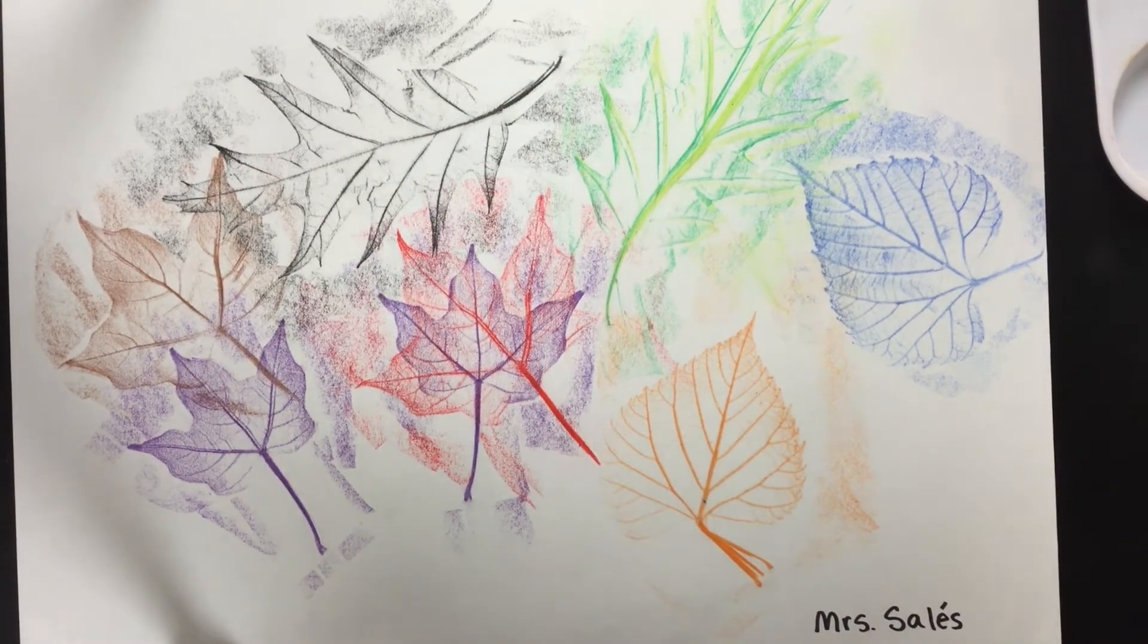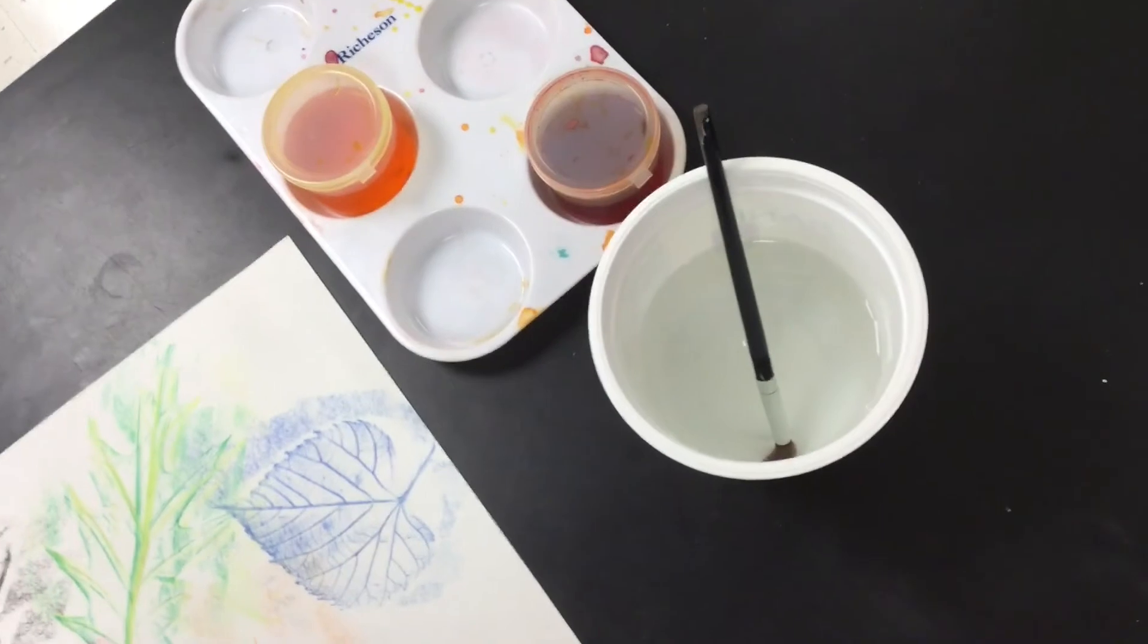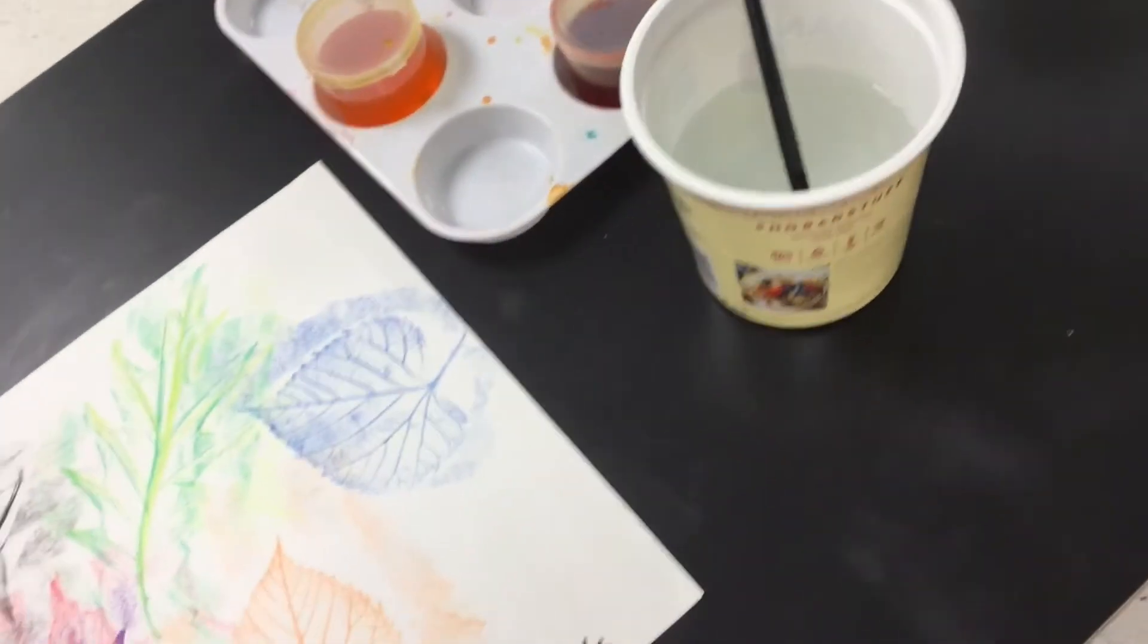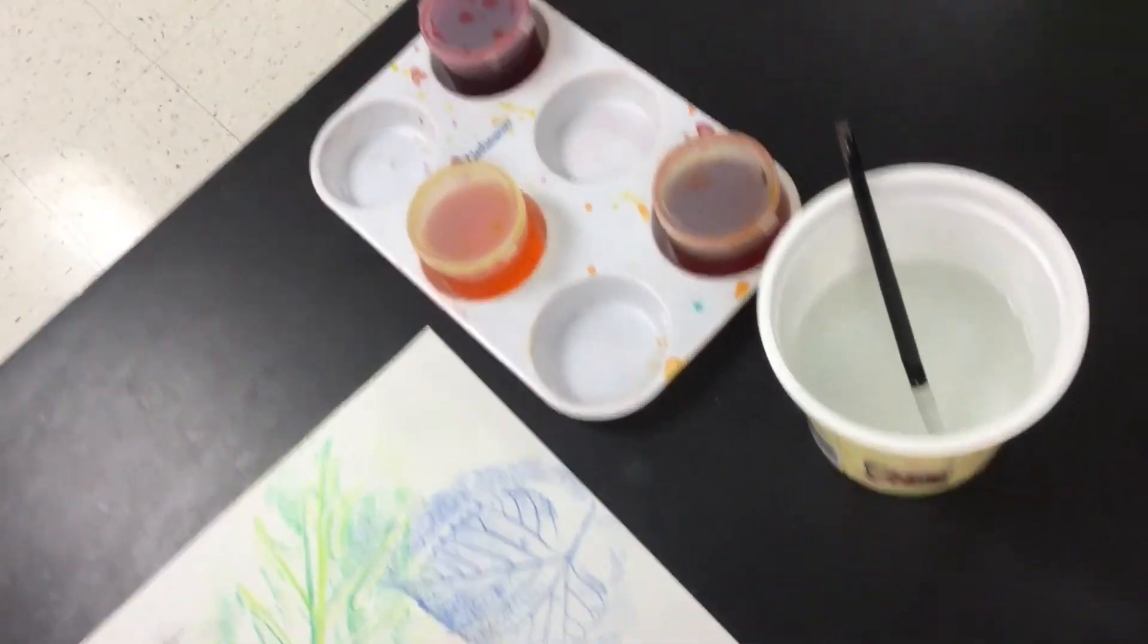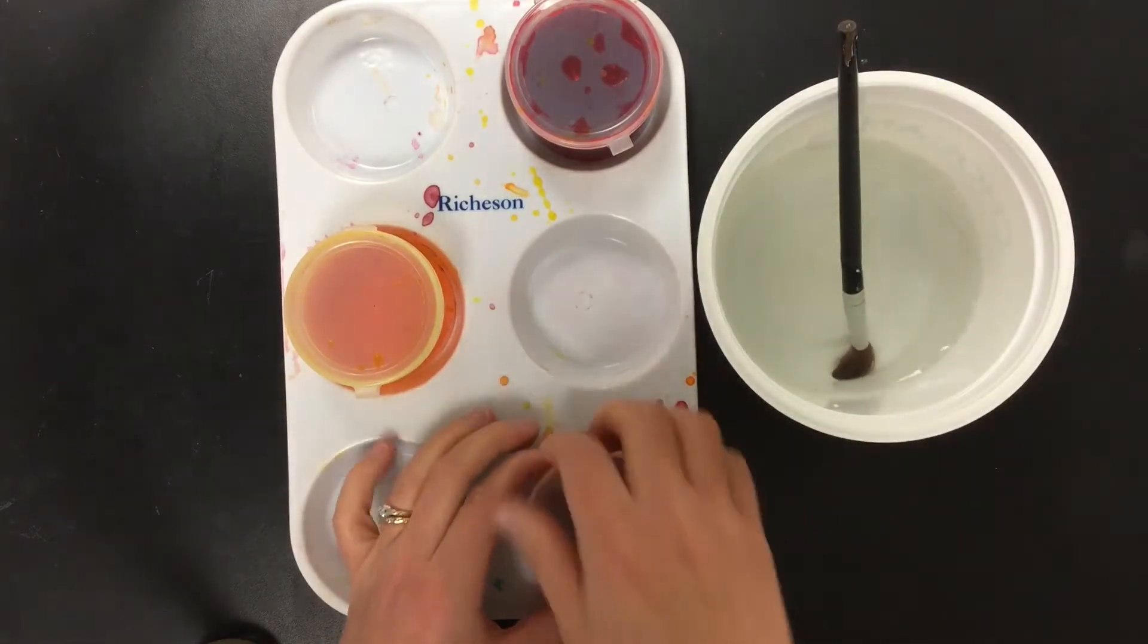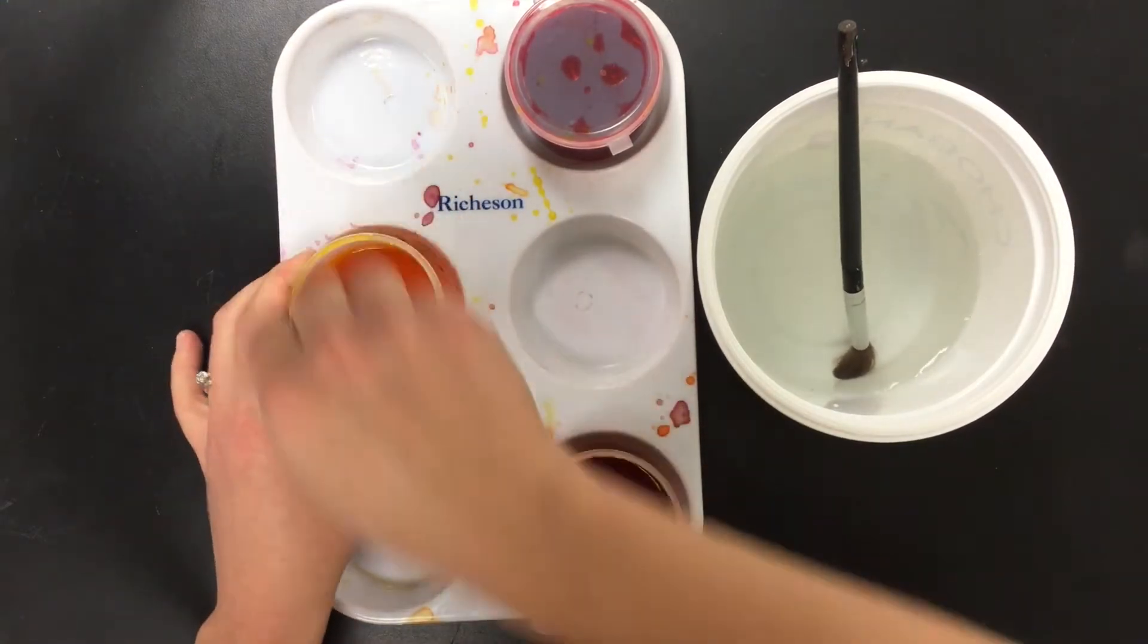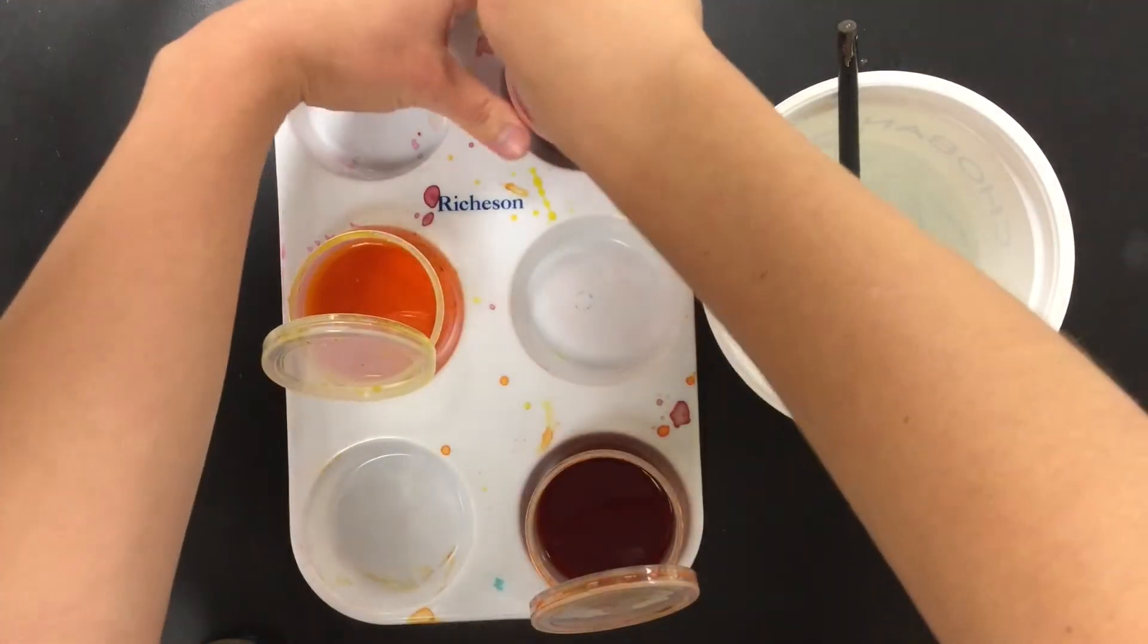We're going to have our texture rubbings that we made, and we're also going to be using liquid watercolor paints. So here's what they look like. First thing you should do is open up the liquid watercolors really carefully. They just have little pop tops on them. So very carefully open them up.